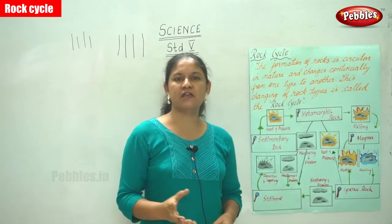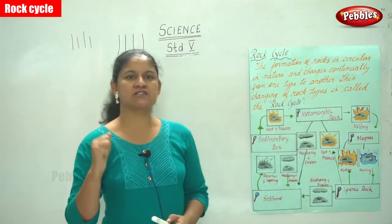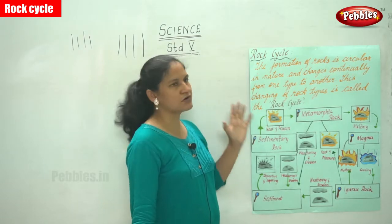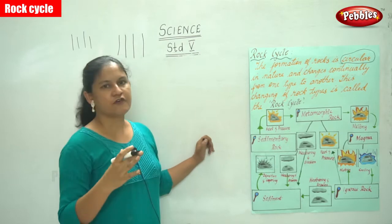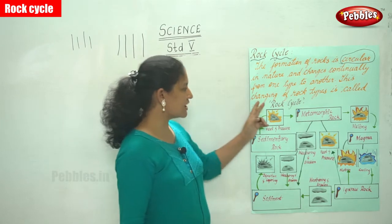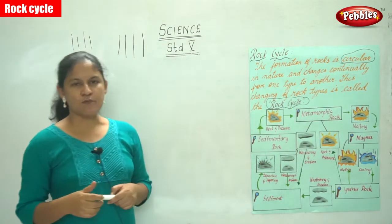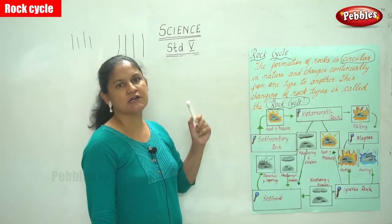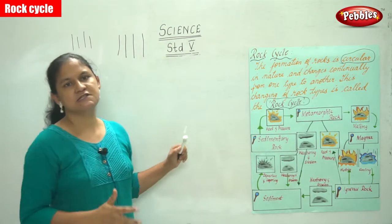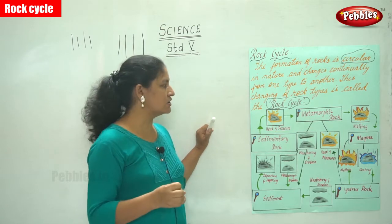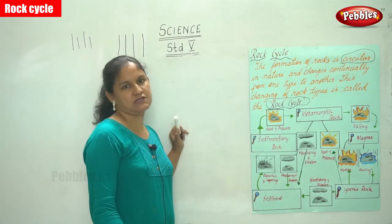Rocks are being formed, and it is also due to natural calamities that enable the formation of rocks. The formation of rocks is circular in nature and changes continually from one type to another. This changing of rock types is called the rock cycle. We have a diagram that depicts the rock cycle.